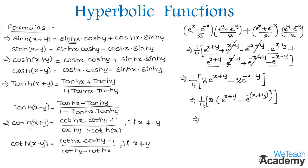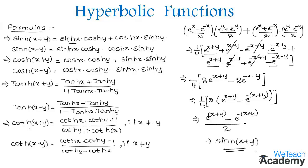Here 2 and 4 get cancelled, and we are left to get (e^(x+y) minus e^(-(x+y))) divided by 2. This is the definition of sinh, so we get hyperbolic sin(x+y). By considering the LHS we have proved the addition formula, and similarly we can prove all these formulas.